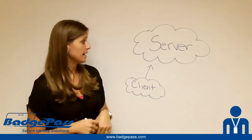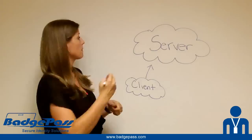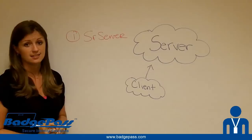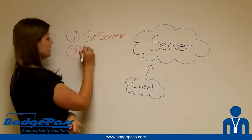The way we quote Smart Reg server is one license of Smart Reg server version, and that actually includes one device license of Smart Reg. So if you've got a customer who wants 20 different enrollment stations, all you need are 19 additional device licenses of Smart Reg.